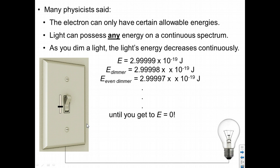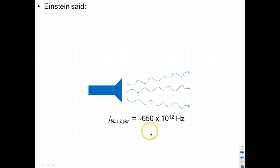They, as it turns out, they were wrong. So imagine we have a flashlight. And then we'll look at what Einstein said, which was different. This flashlight emits blue light, blue rays. And we know the frequency of blue light is around 650 terahertz, or 10 to the 12 hertz.